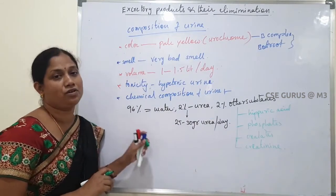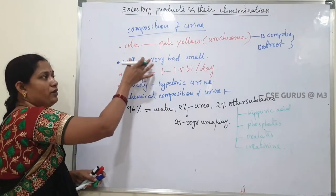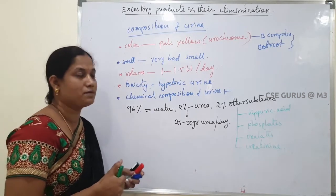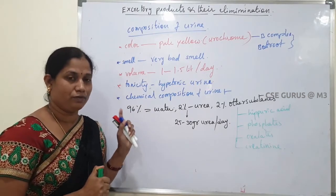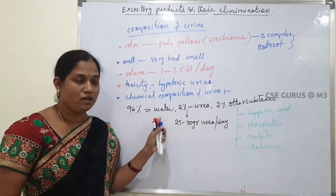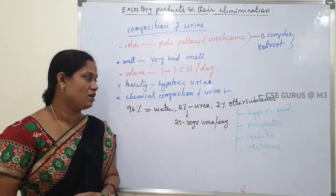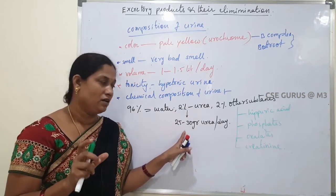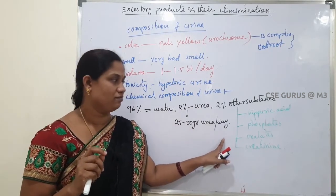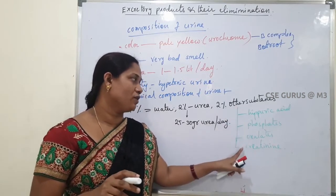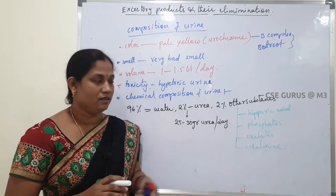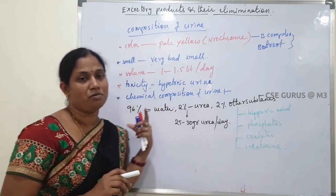In summary, urine is generally pale yellow in color, gives a bad smell, and a healthy person excretes 1 to 1.5 liters per day. Hypertonic urine is produced in mammals. Chemical composition is 96% water, 2% urea — with 25 to 30 grams excreted per day — and 2% other substances including hippuric acid, phosphates, oxalate, and creatinine.